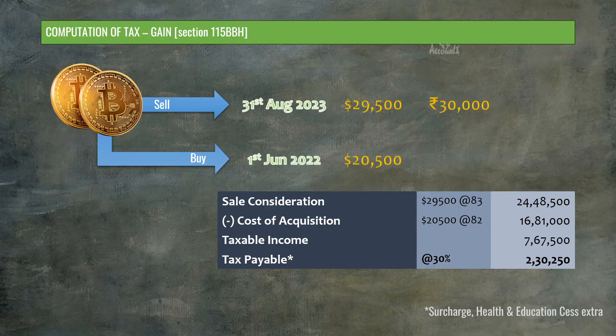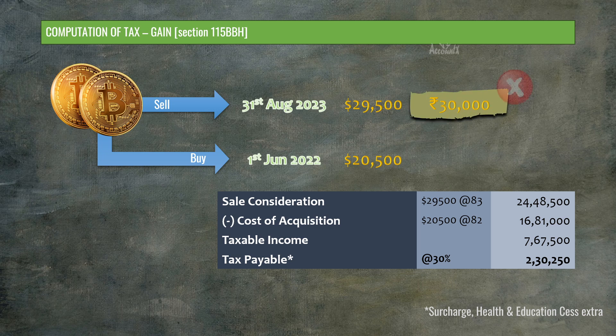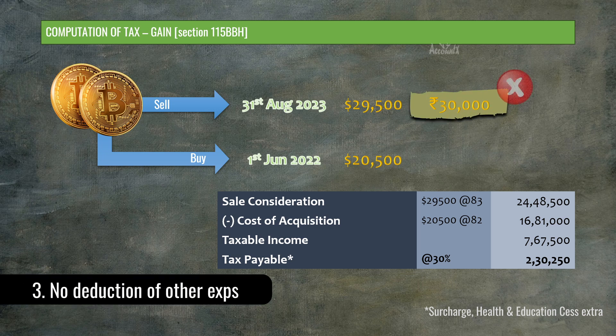So whether you hold this asset for 15 months, 30 months, or whatever period, the cost of acquisition is not going to be adjusted for inflation because you don't get indexation benefit. Also, whatever expense you incur on the sale of cryptocurrencies — in this case Rs. 30,000 — this expense cannot be claimed as a deduction, unlike other capital assets like immovable property where this deduction is possible.